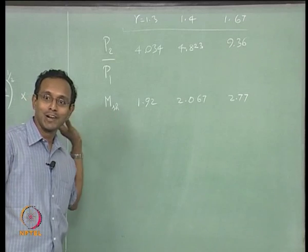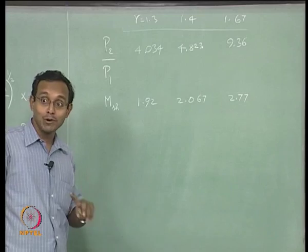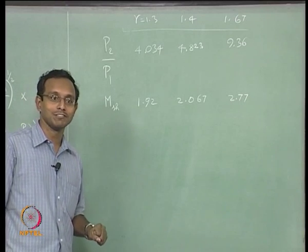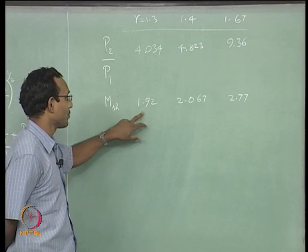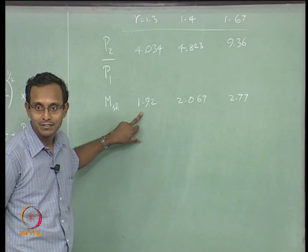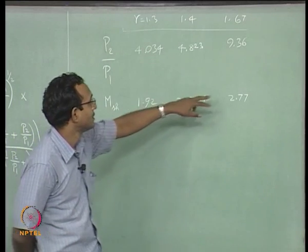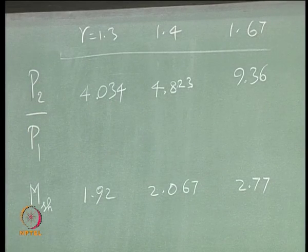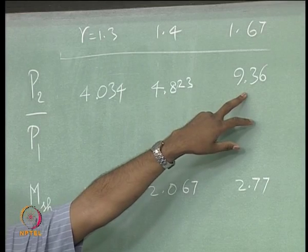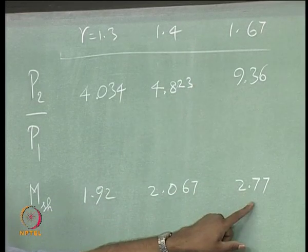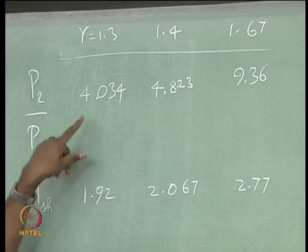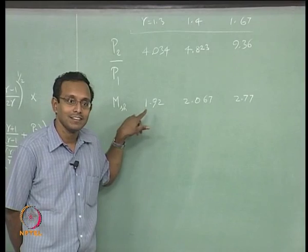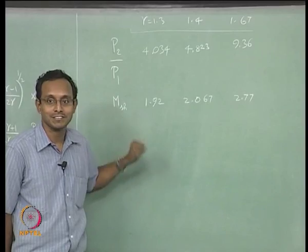I am telling only one statement across the last few classes: when I compare across gamma values, the gas responds better to waves if it is more compressible. If the shock Mach number is only 1.92 for γ = 1.3, that is enough to create supersonic flow behind it, whereas for γ = 1.67 I need a shock Mach number of 2.77. Shock can move faster relatively in a more compressible gas.